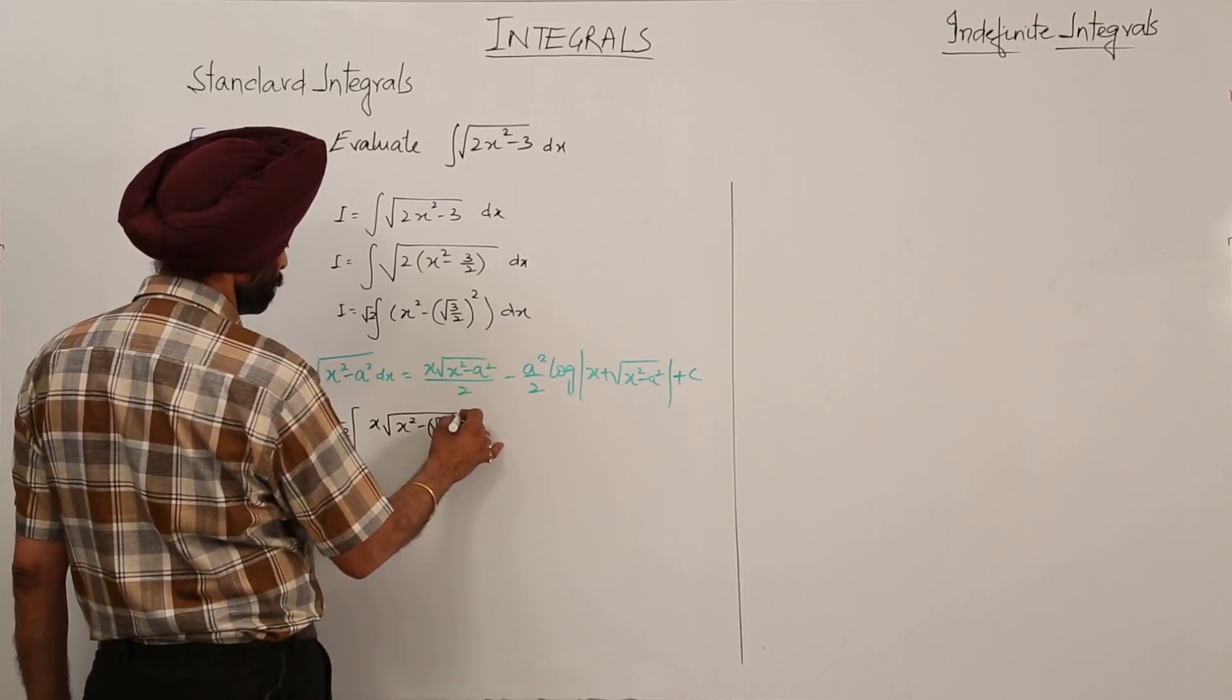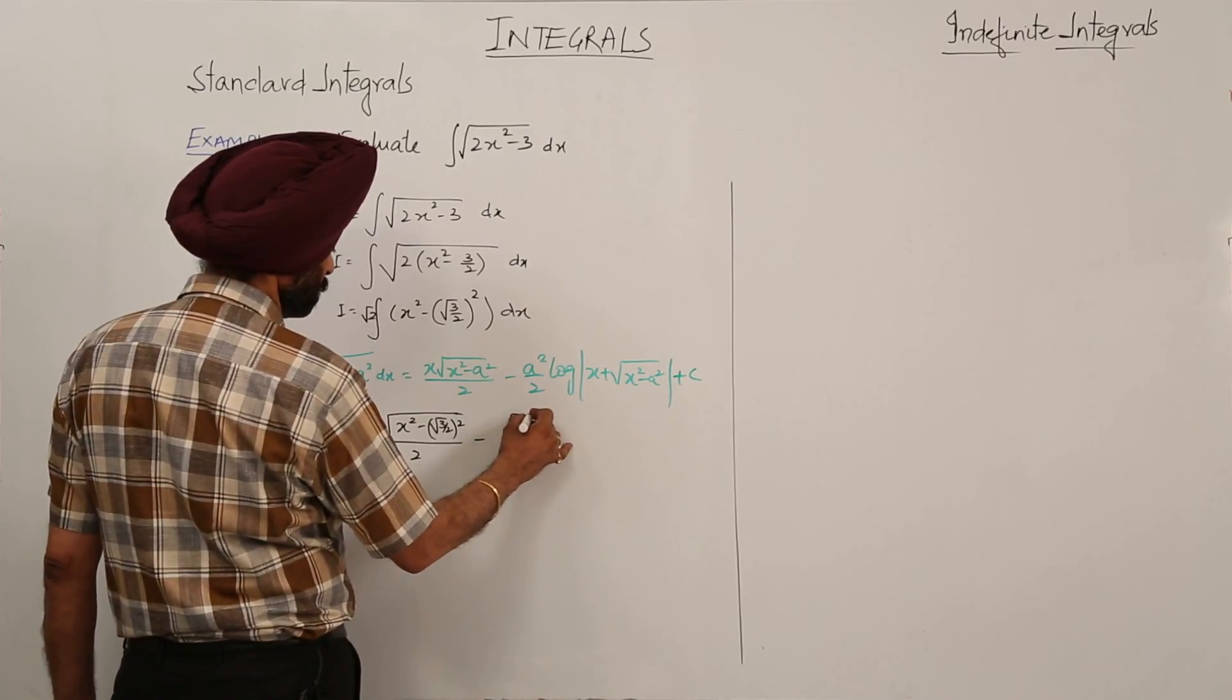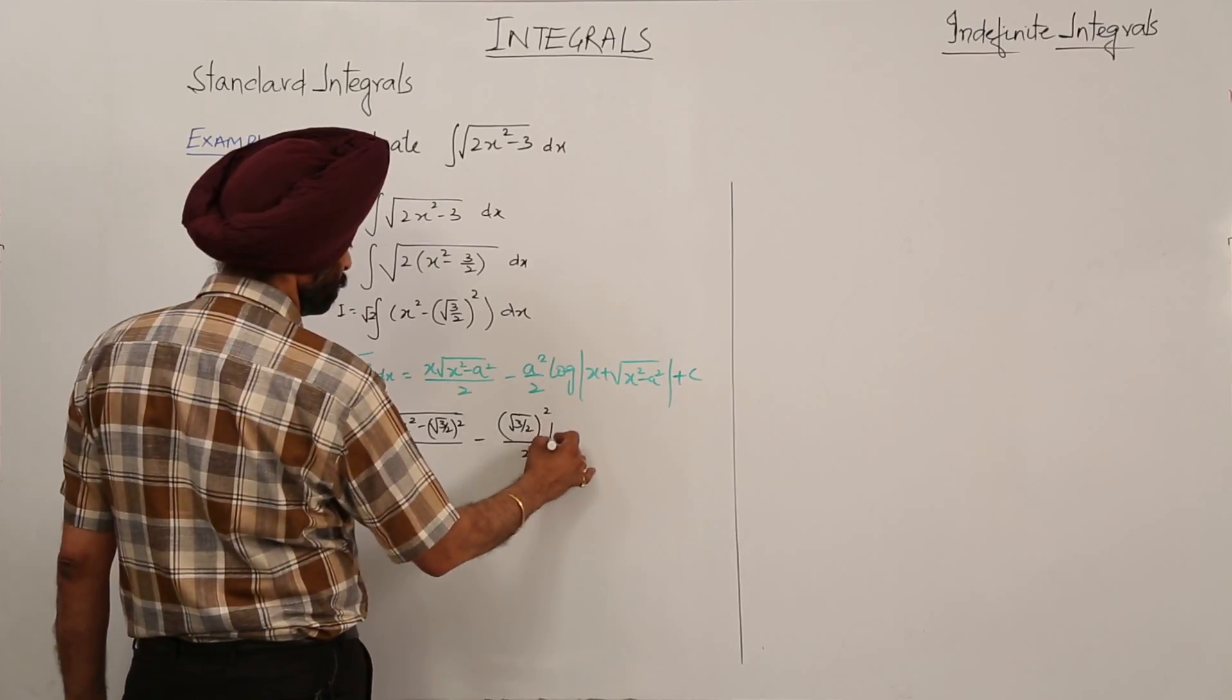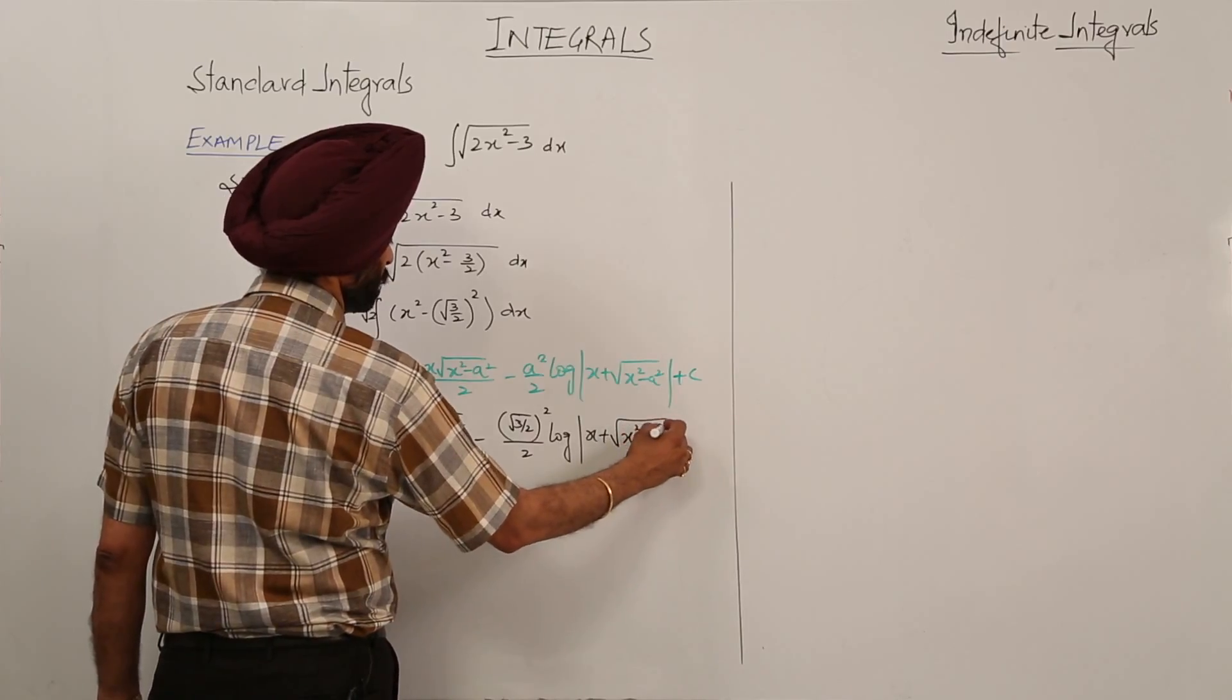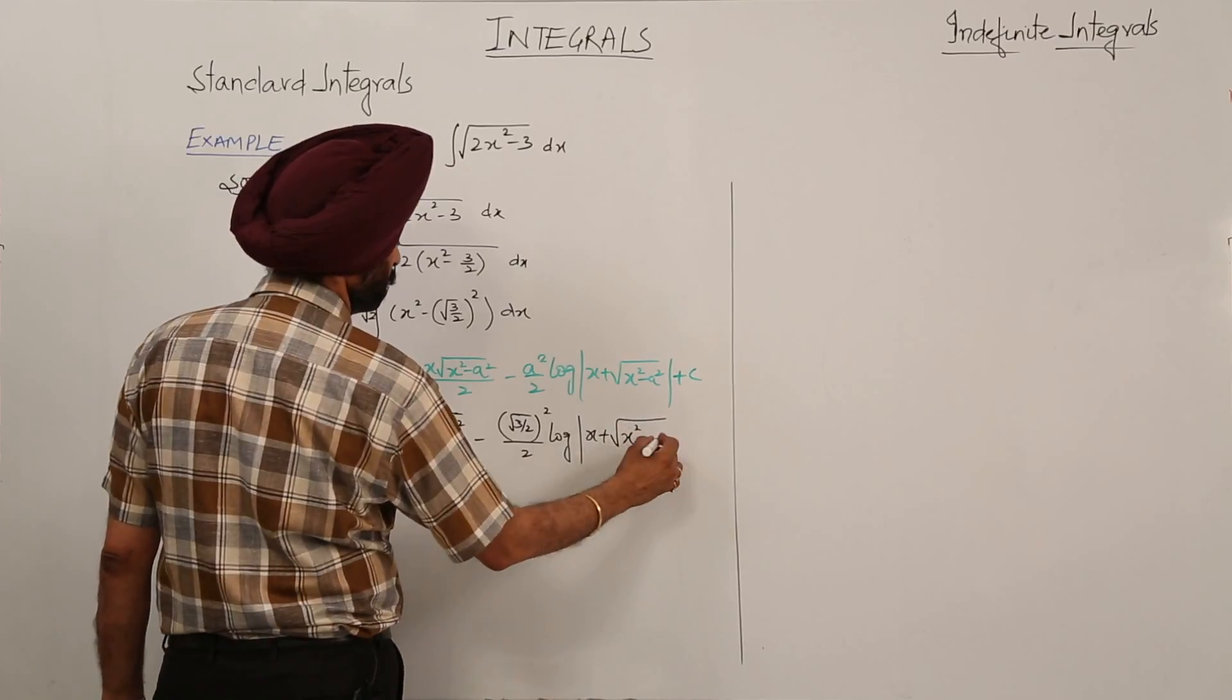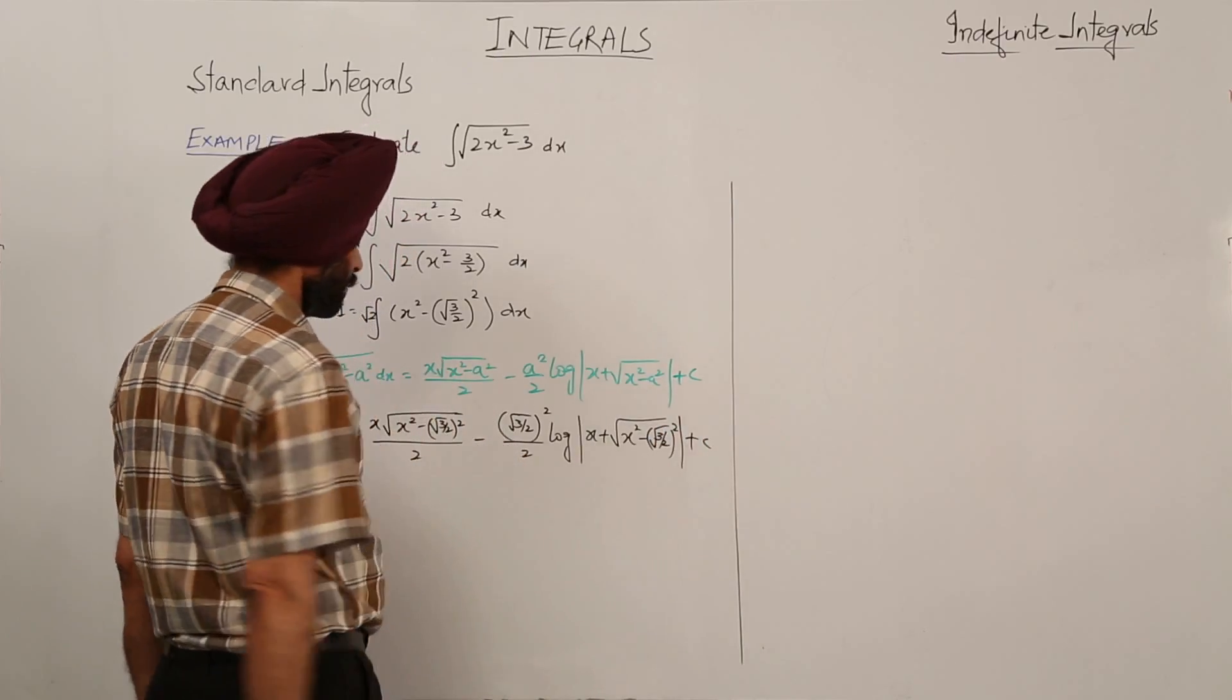minus root 3 by 2 whole square upon 2 log x plus x square minus root 3 by 2 whole square plus c. Is it clear?